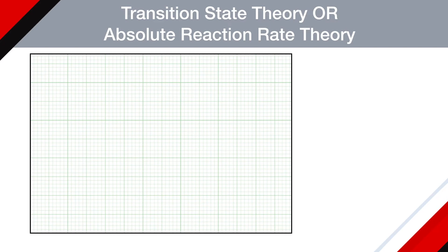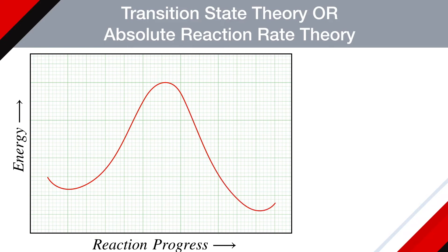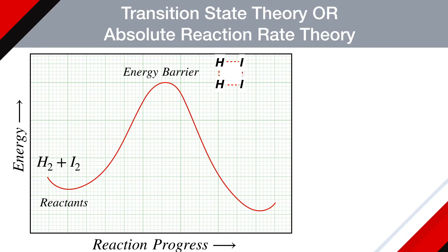If we plot a graph of energy against reaction progress for the formation of hydrogen iodide from hydrogen and iodine, the curve is shown here in the red colored line. Initially there are reactants — hydrogen and iodine. As the reaction progresses, the energy of these molecules increases because of the formation of a transition state, where both hydrogen atoms and both iodine atoms are all associated. This high energy state is the energy barrier which the reactants must cross.